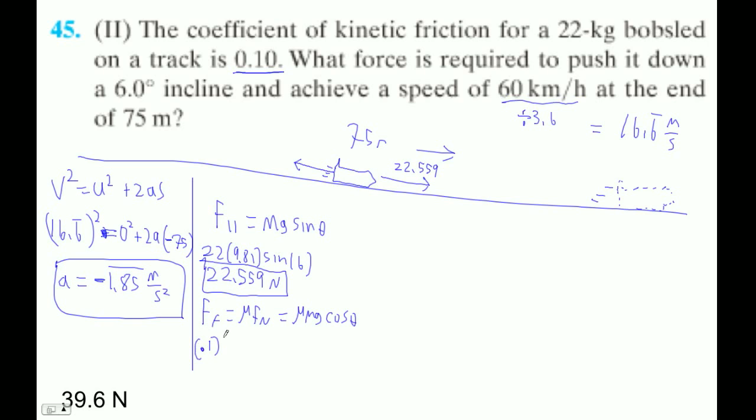So the force of friction is mu times the normal force, which is going to be mu times m times g cos theta. So that's going to be 0.1 times 22 times 9.81 times cos of 6. Let's do that. 21.464. Now we only have two sig figs, if I carry five, that should be enough. So that is our friction force, and that will be a force acting up the plane, 21.464.